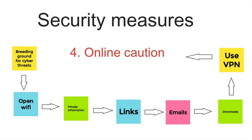Step number four: be cautious when you are online. When browsing the internet, because it serves as a breeding ground for cyber threats, it is important to be cautious. Avoid transferring private information on open Wi-Fi networks — for example, those ones that are used in the shopping malls.